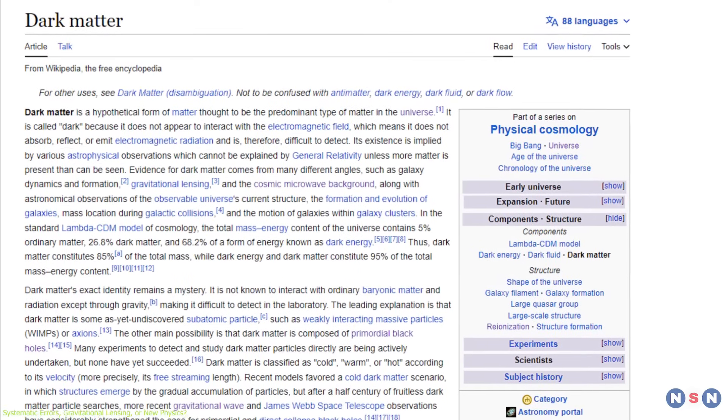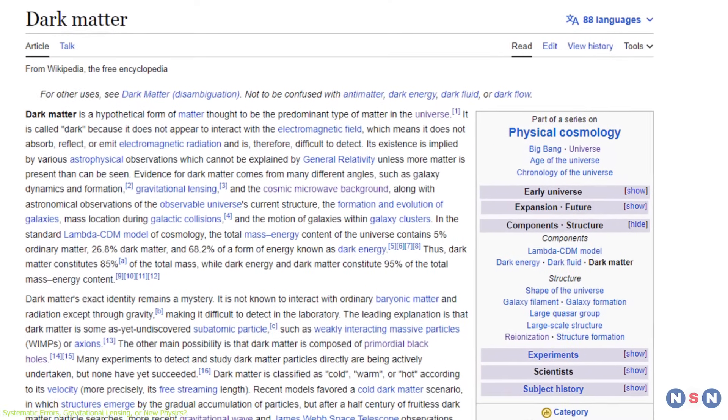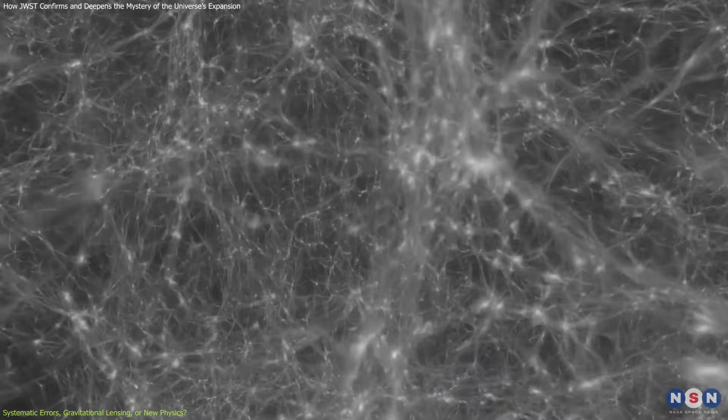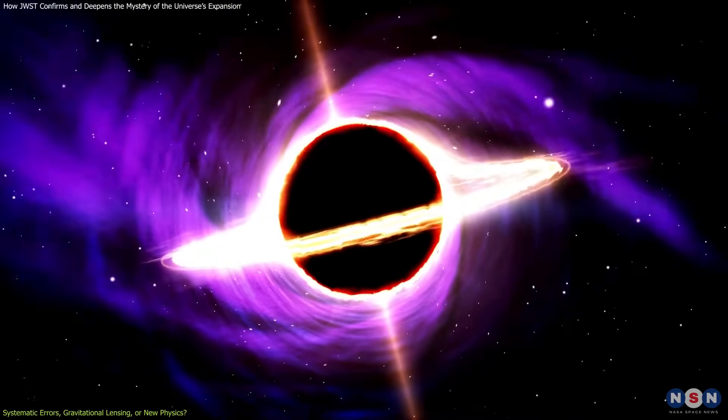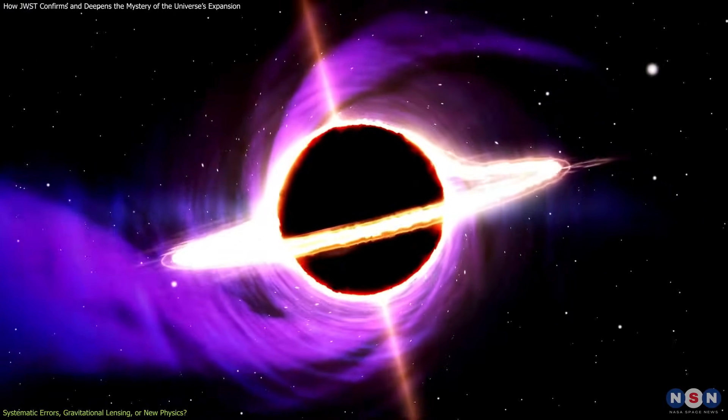Dark matter is a mysterious form of matter that does not interact with light or ordinary matter, but only with gravity. Black holes are regions of space where gravity is so strong that nothing can escape from them, not even light.